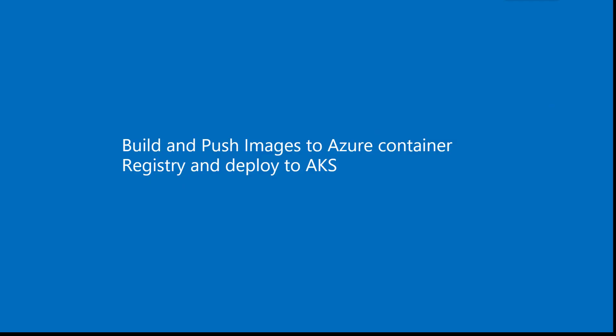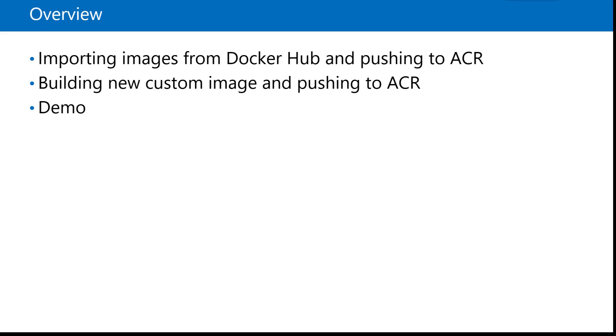In this session, we will learn how to build and push images to Azure Container Registry and deploy these images to AKS or Azure Kubernetes Services. Here is the overview of the session. First we will learn how to import images from Docker Hub and push these images to Azure Container Registry. Then we will understand how to build new custom images and push them to Azure Container Registry. Then finally we will follow with the demo.